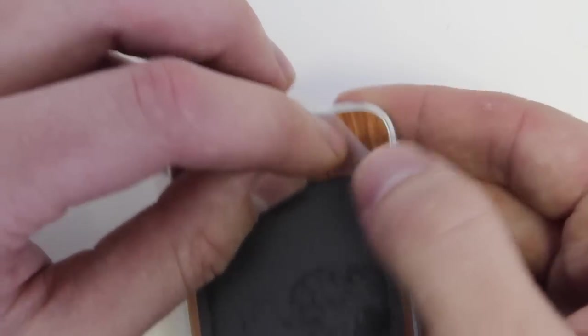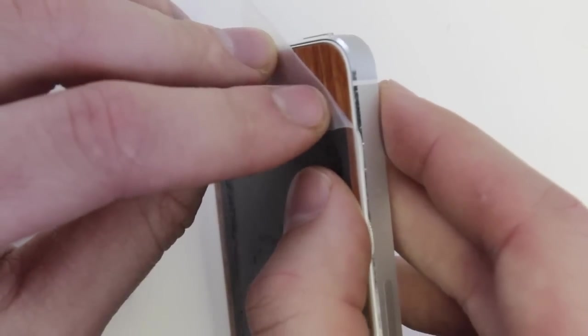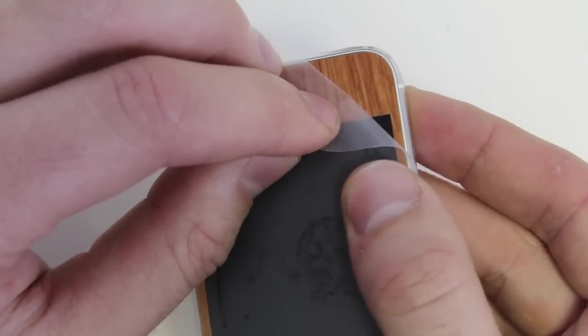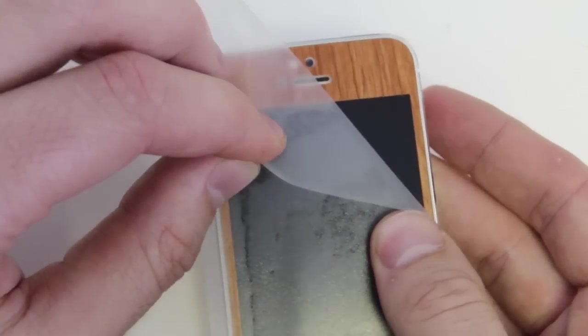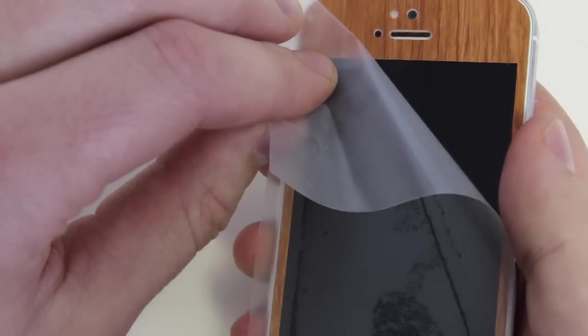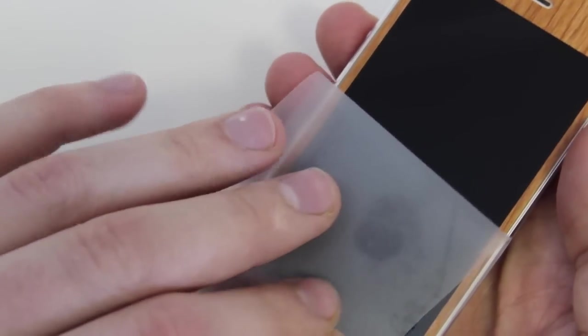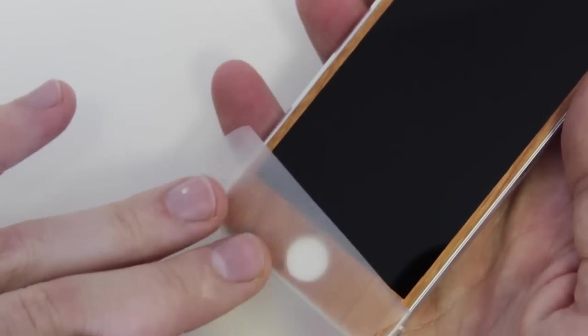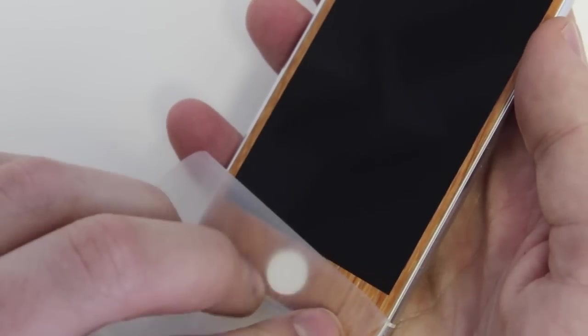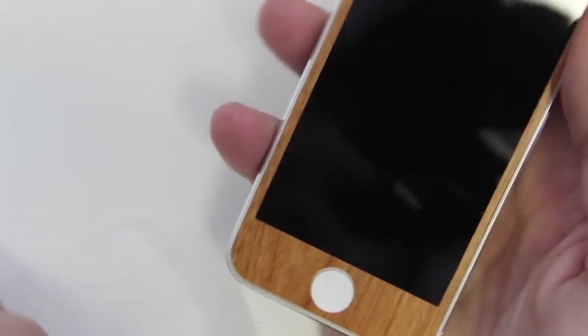If this starts to lift up, just push it back down with your nail, but if you pull this back at a really tight angle like this, it'll stay completely on. And just pull this straight down, it's perfect.